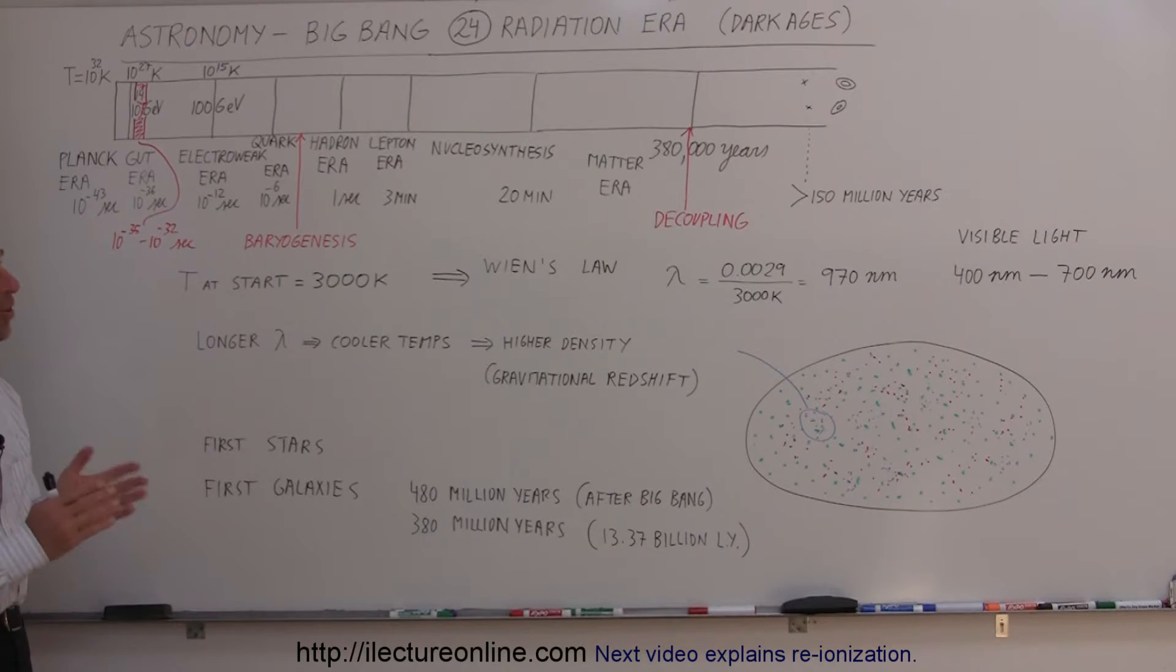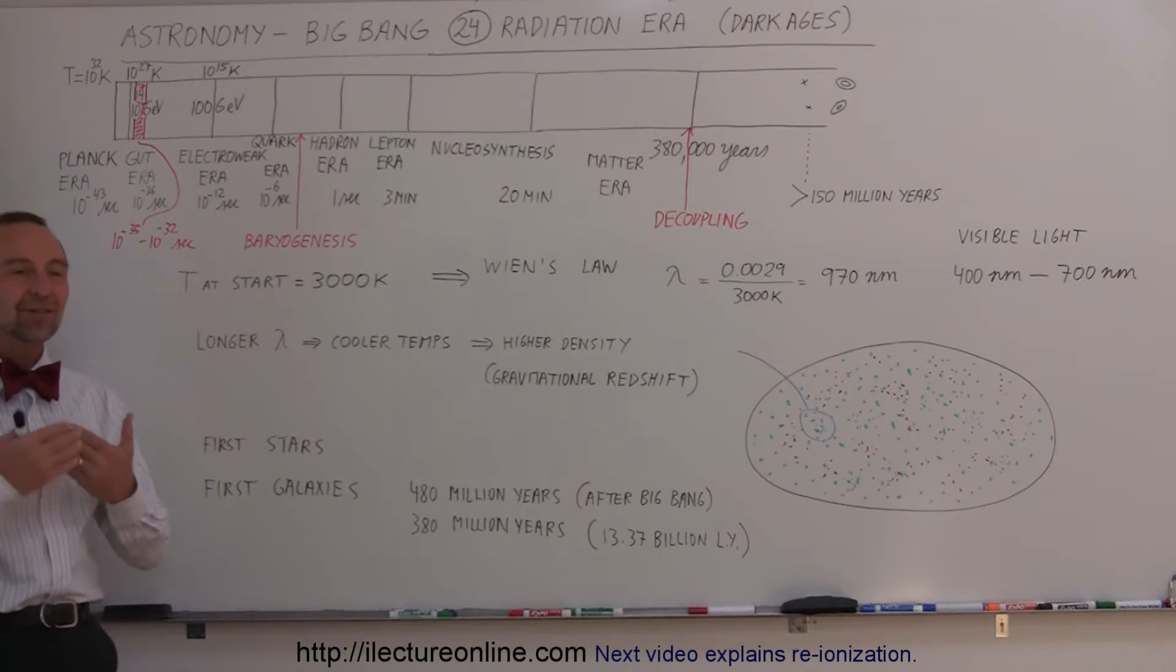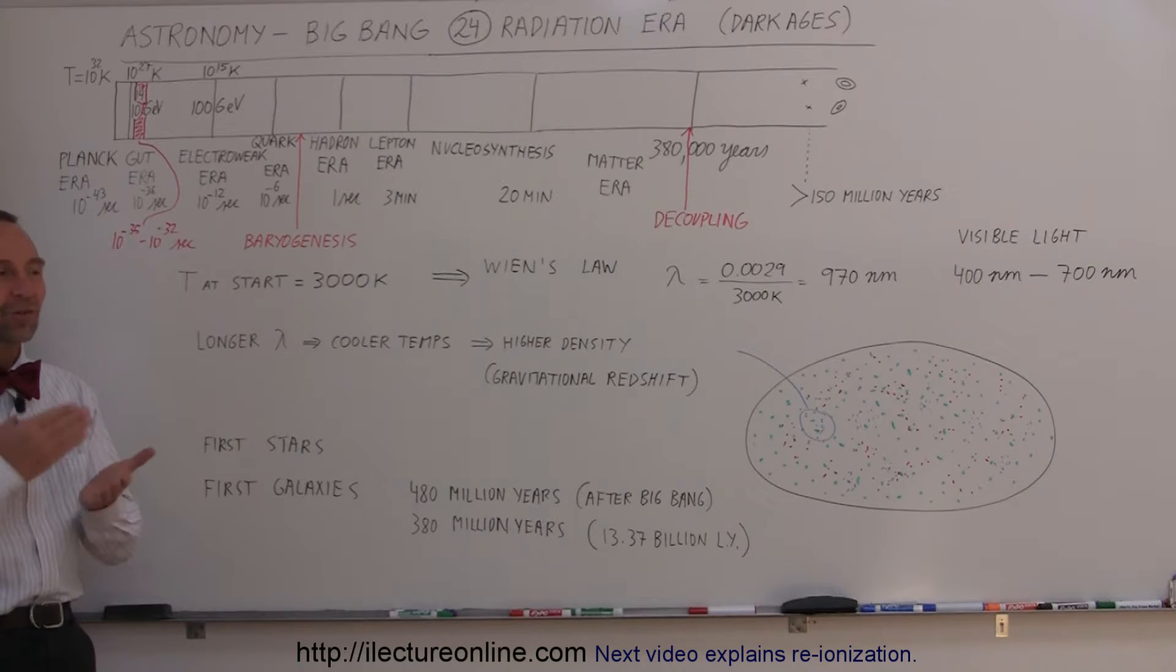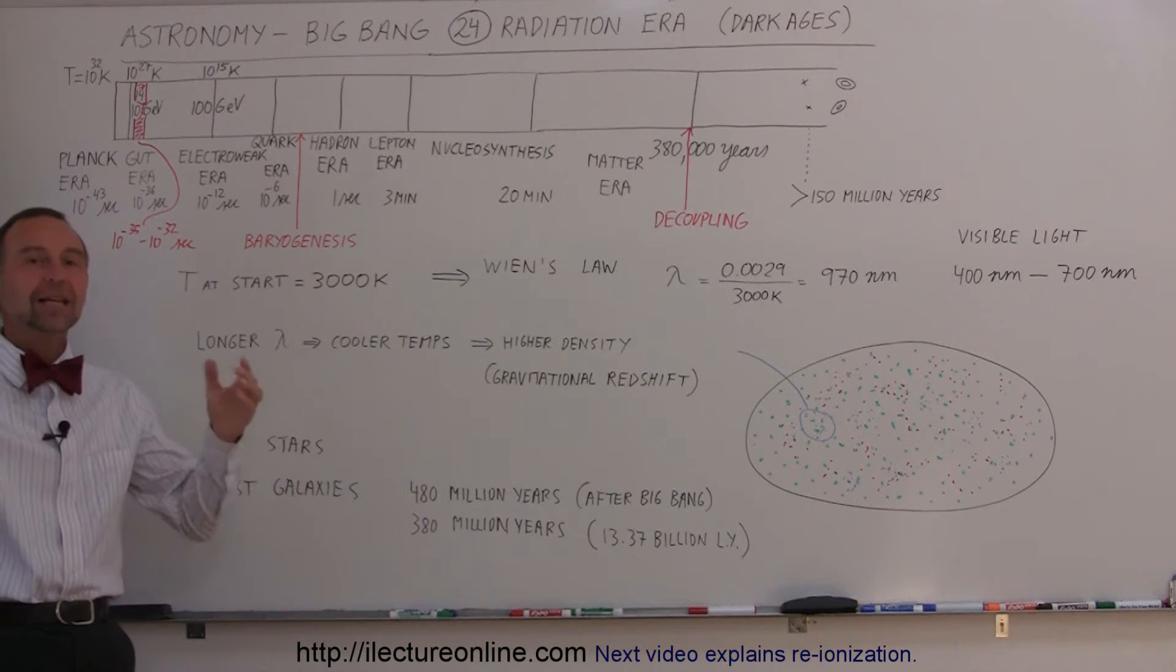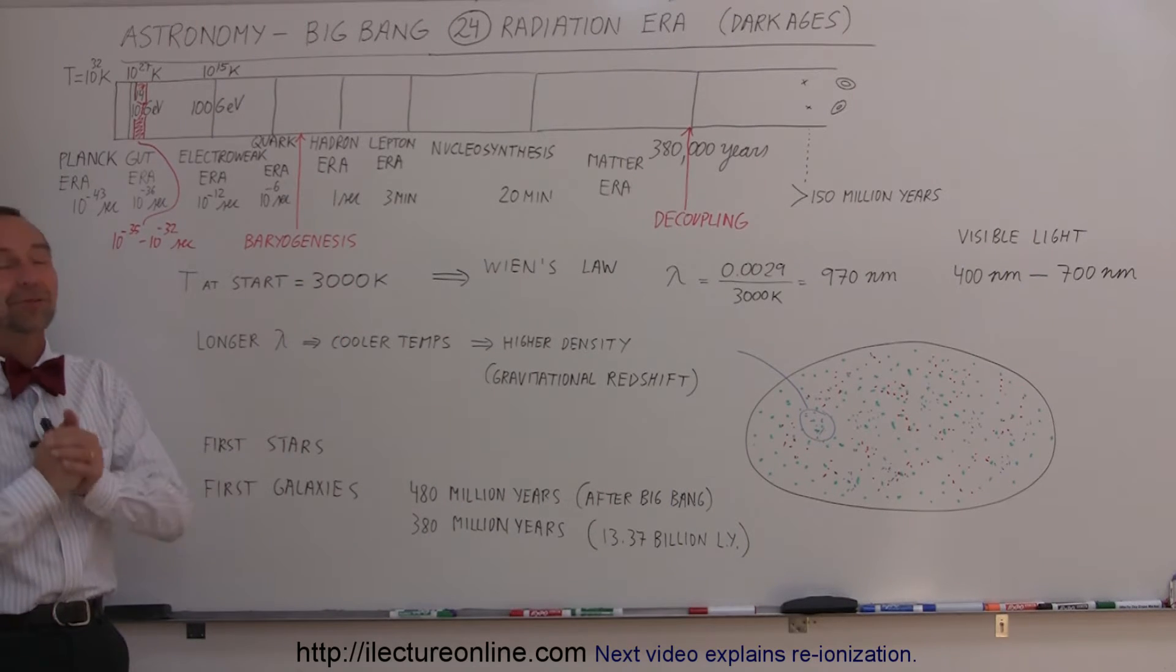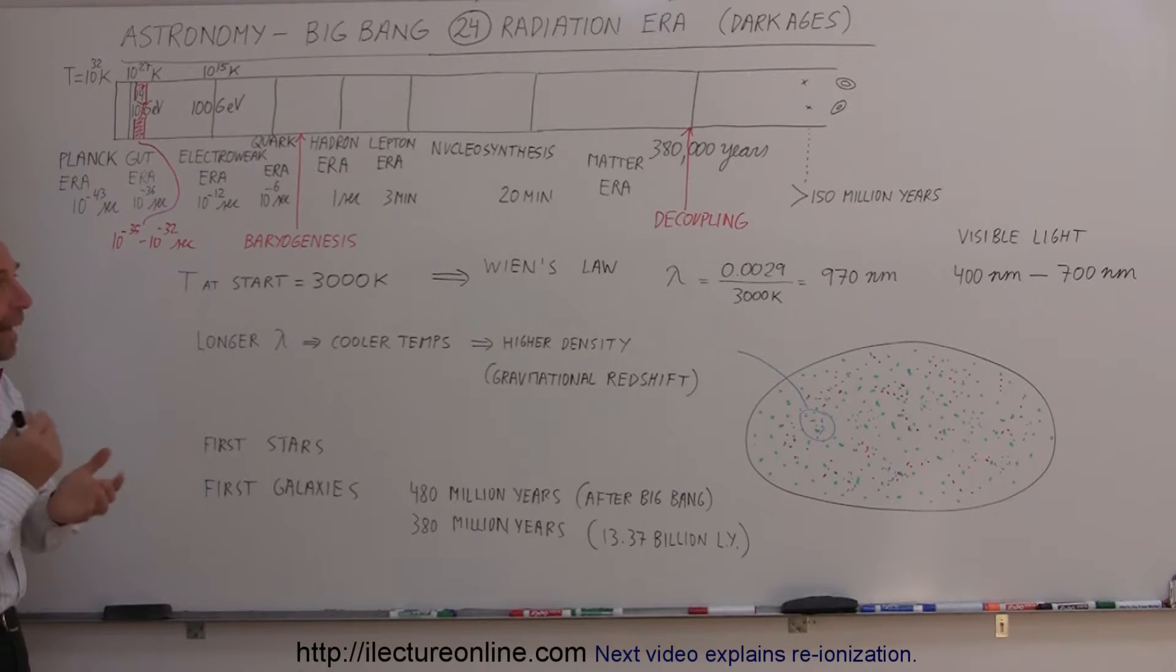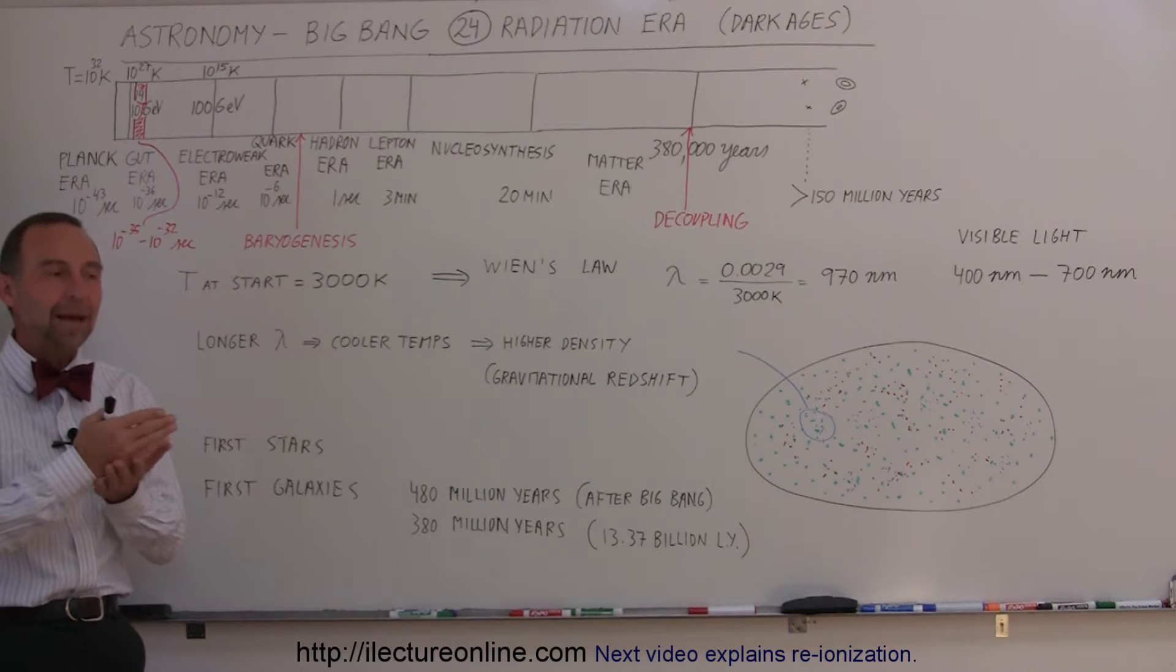Welcome to Electron Line. We're going to talk about the next era since the Big Bang called the Radiation Era, which began at the decoupling at the moment when radiation began to float freely through the universe. That happened about 380,000 years after the Big Bang.